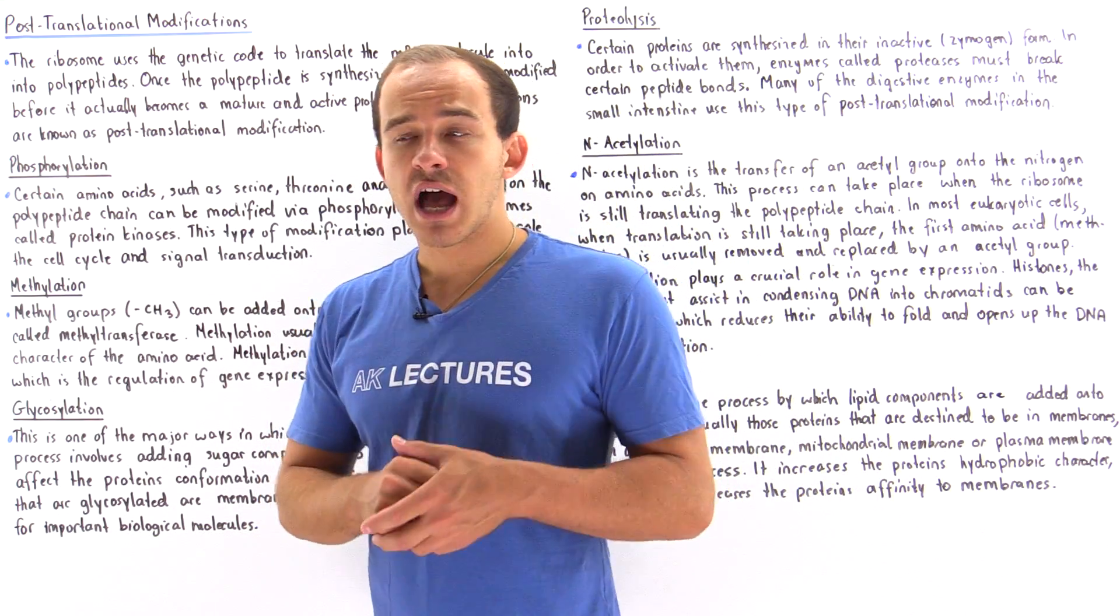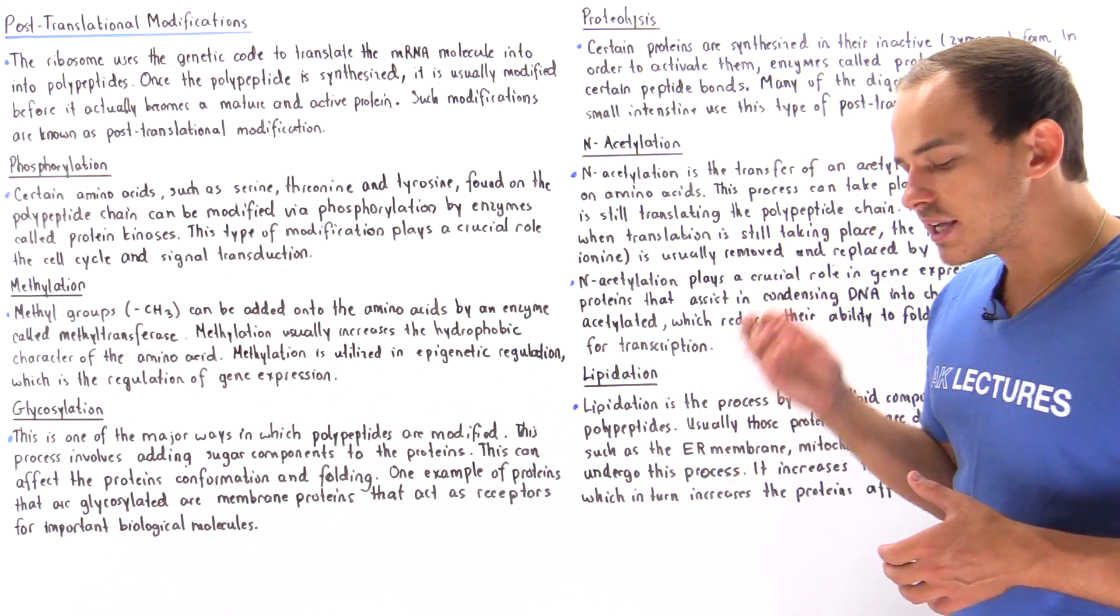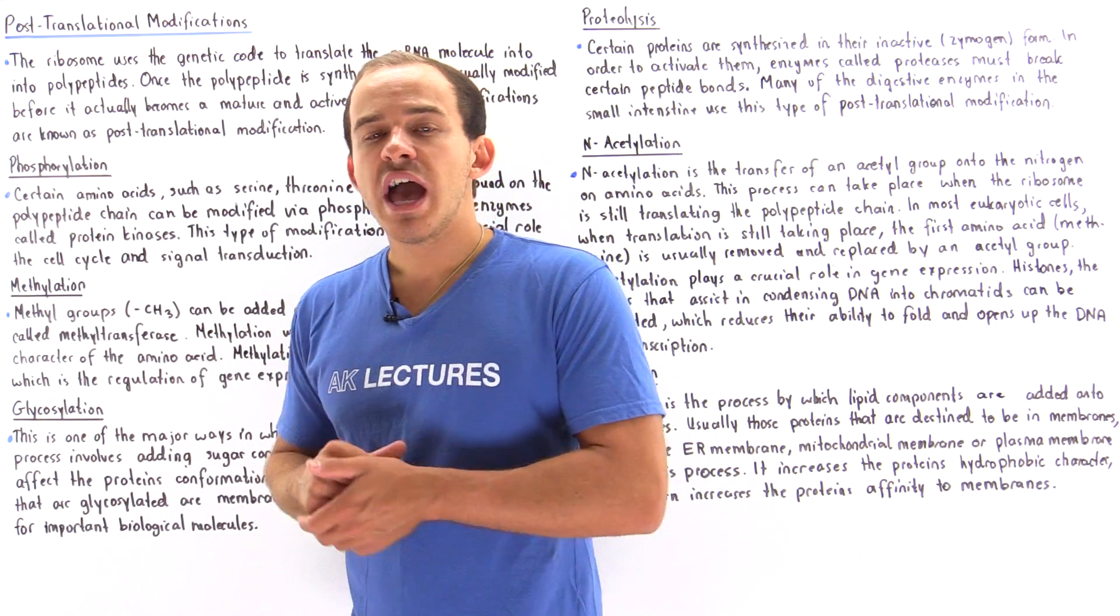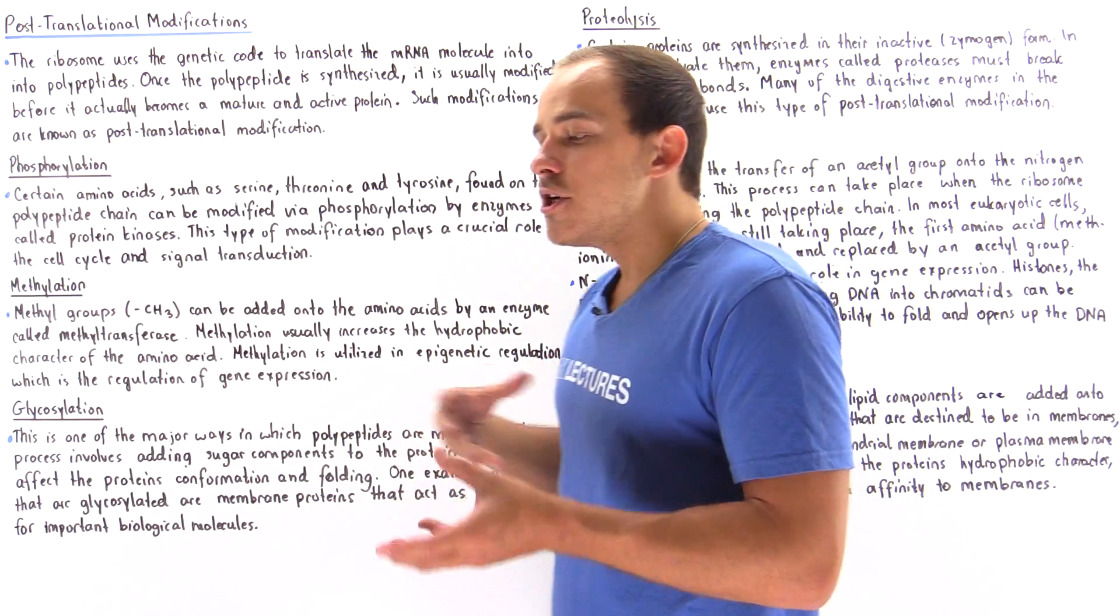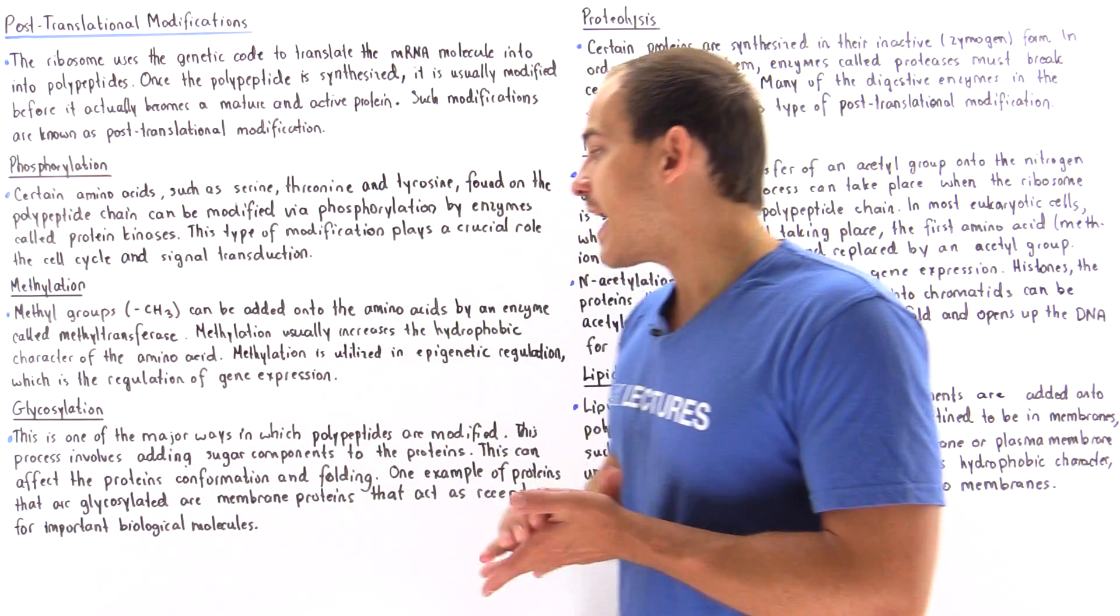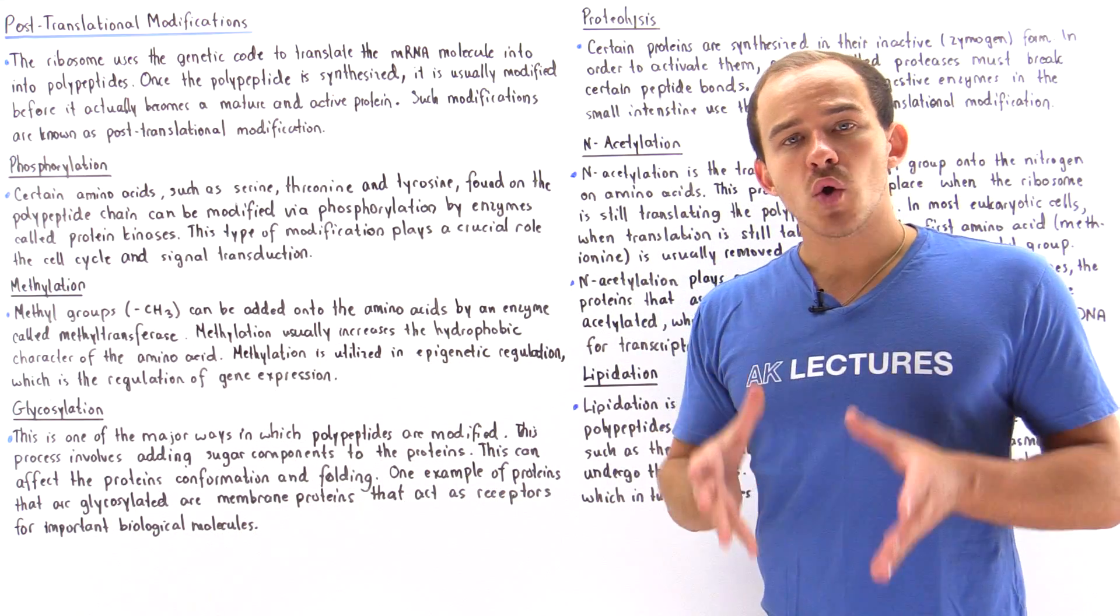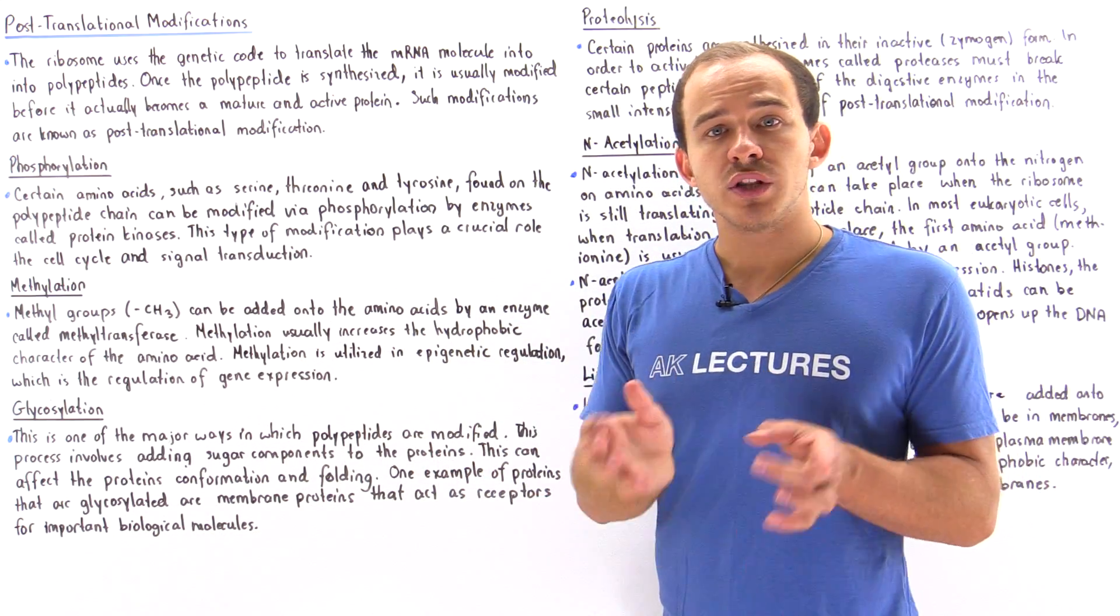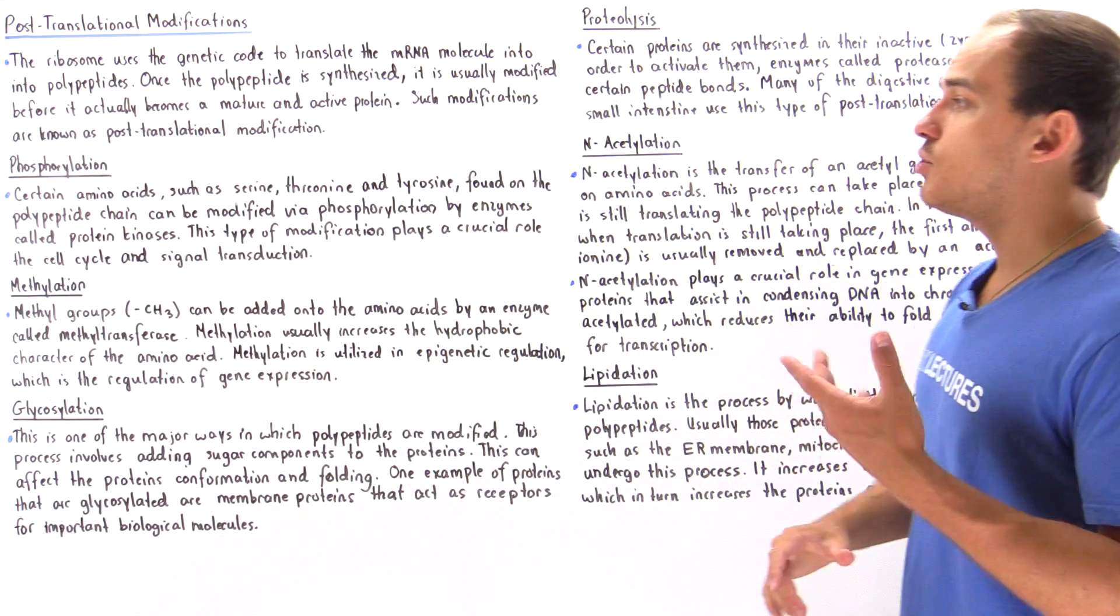Let's move on to the third type of post-translational modification known as glycosylation. Glycosylation is the process by which we add a sugar component onto our polypeptide chain. By adding a sugar component, we affect the protein's folding process as well as change the conformation of that protein. One example of proteins that are glycosylated are those proteins that ultimately end up on the plasma membrane of the cell. These proteins usually act as receptors for other important biological molecules, such as neurotransmitters.